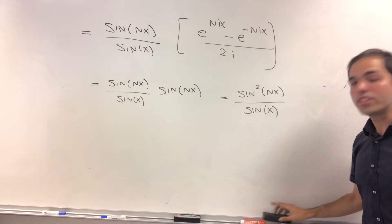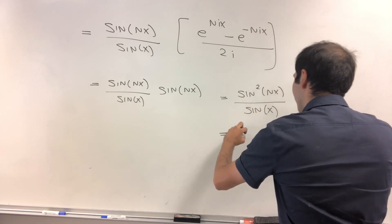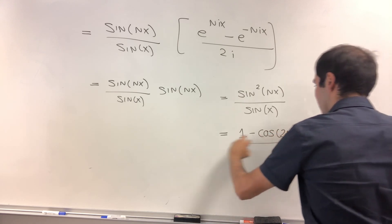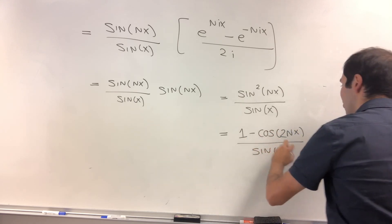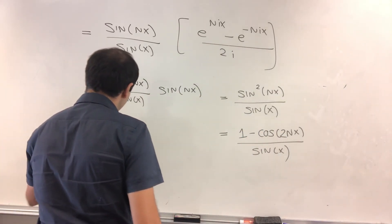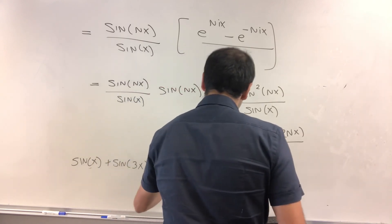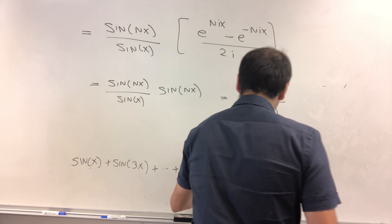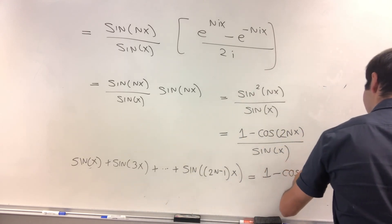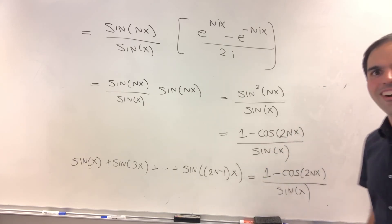And if you want to, you can simplify this even further. If you even call this simplification, you could also write it as 1 minus cosine of 2nx over 2 sine of x. If you don't like squares. So, what have we shown in the end? Again, we've shown that sine of x plus sine of 3x plus dot dot dot plus sine of 2n minus 1x. That's the same thing as 1 minus cosine of 2nx over 2 sine of x. Whoa, how cool is that?